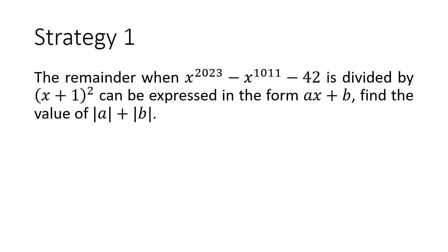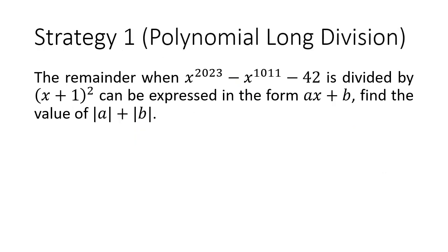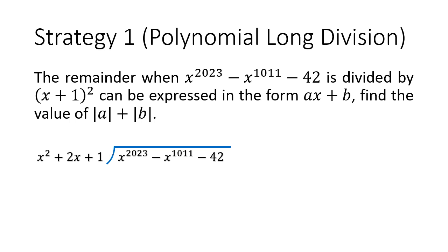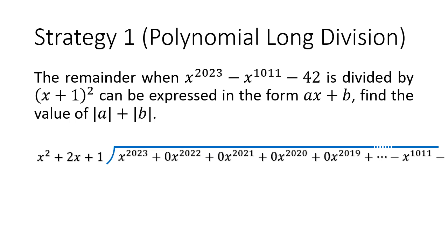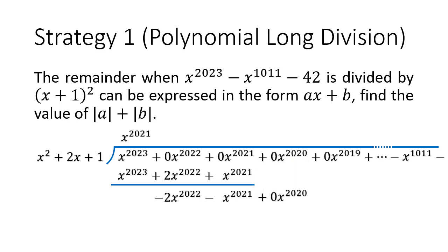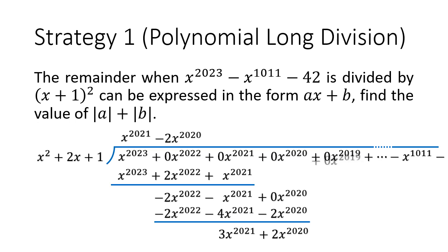Now, the first strategy we can consider is polynomial long division. It sounds clinically insane because it is. You are talking about dividing a degree 2023 polynomial with a degree 2 quadratic. The dividend alone has 2,024 terms in it because we have to consider all those invisible terms with coefficient zeros. And if you do this step by step, as I've shown here, the working is going to be 4,044 lines long.